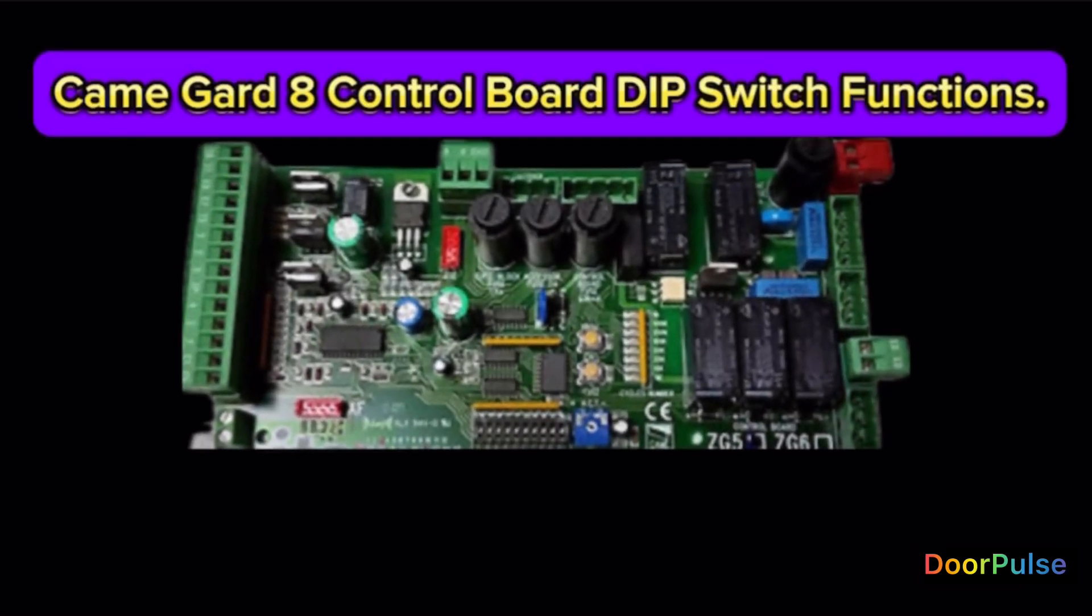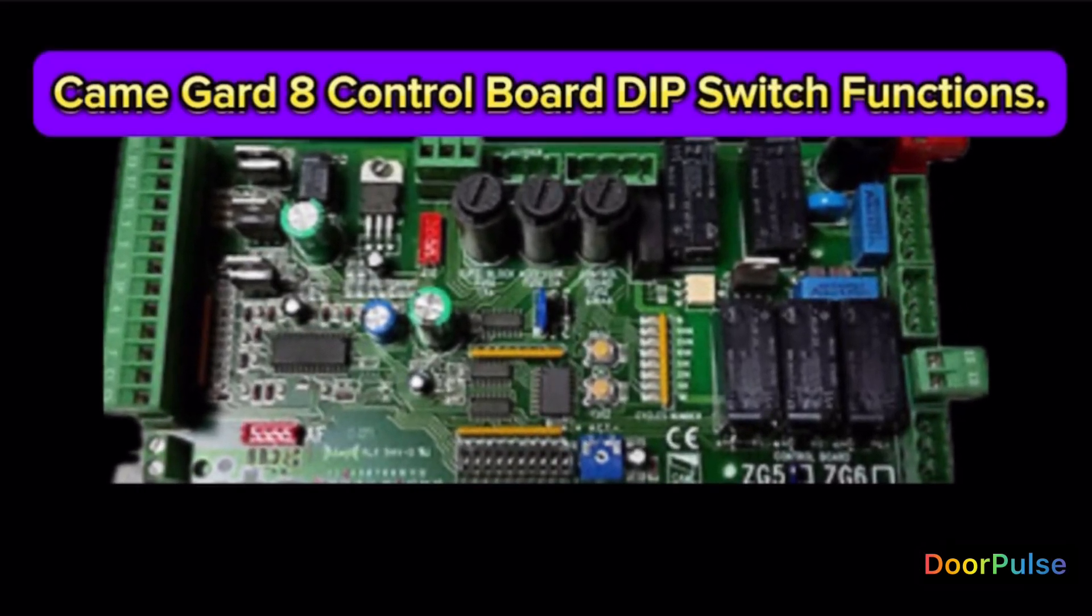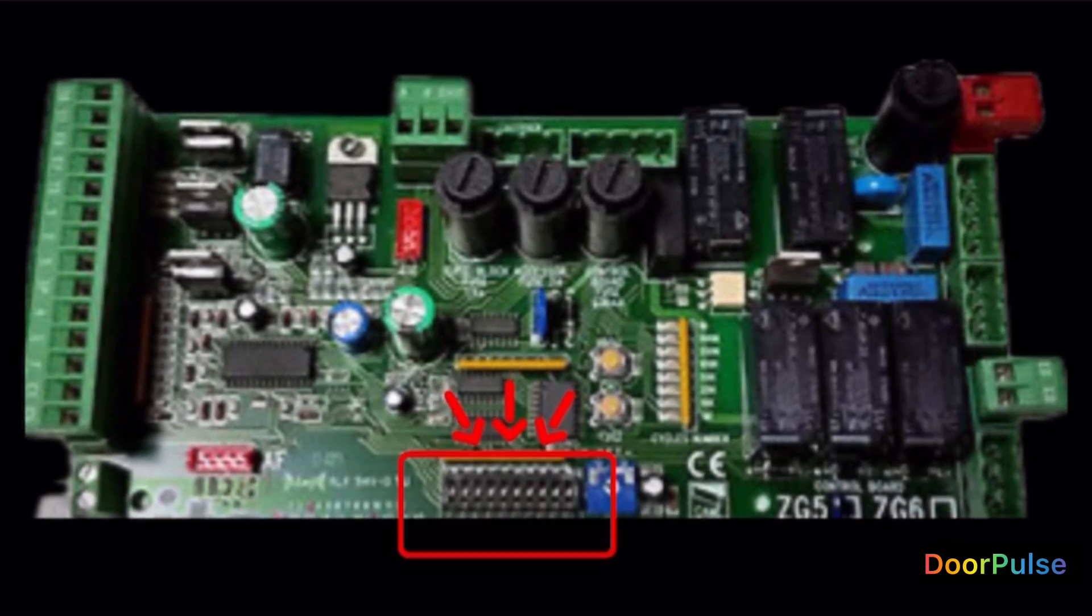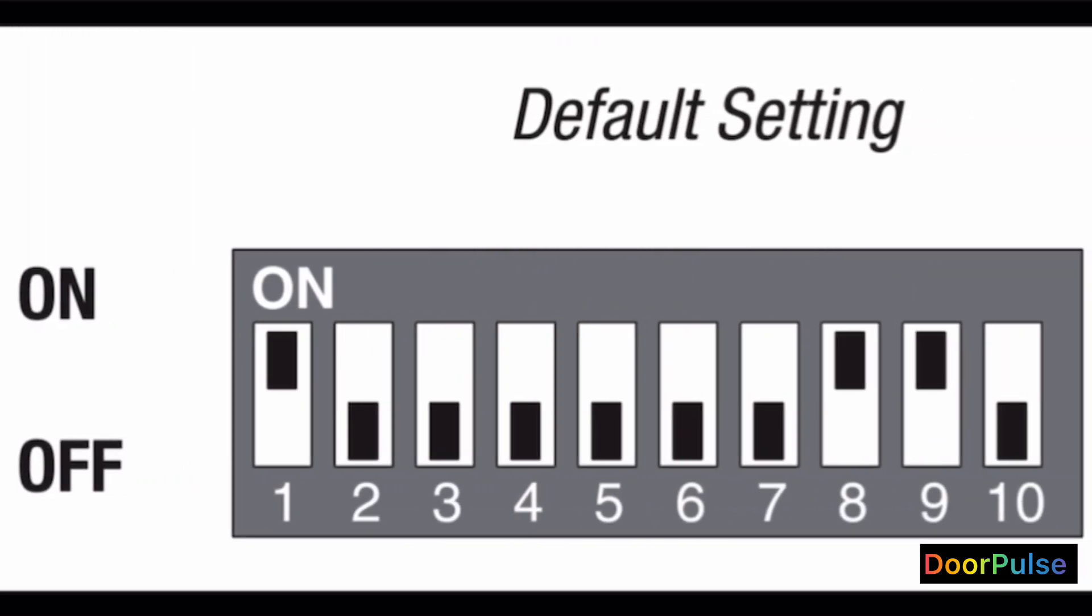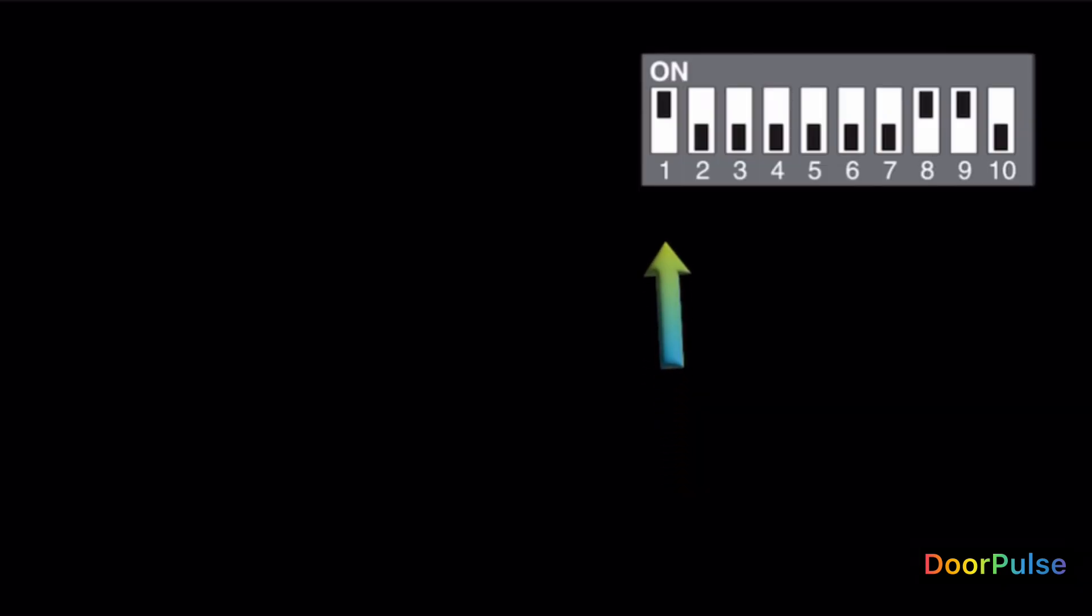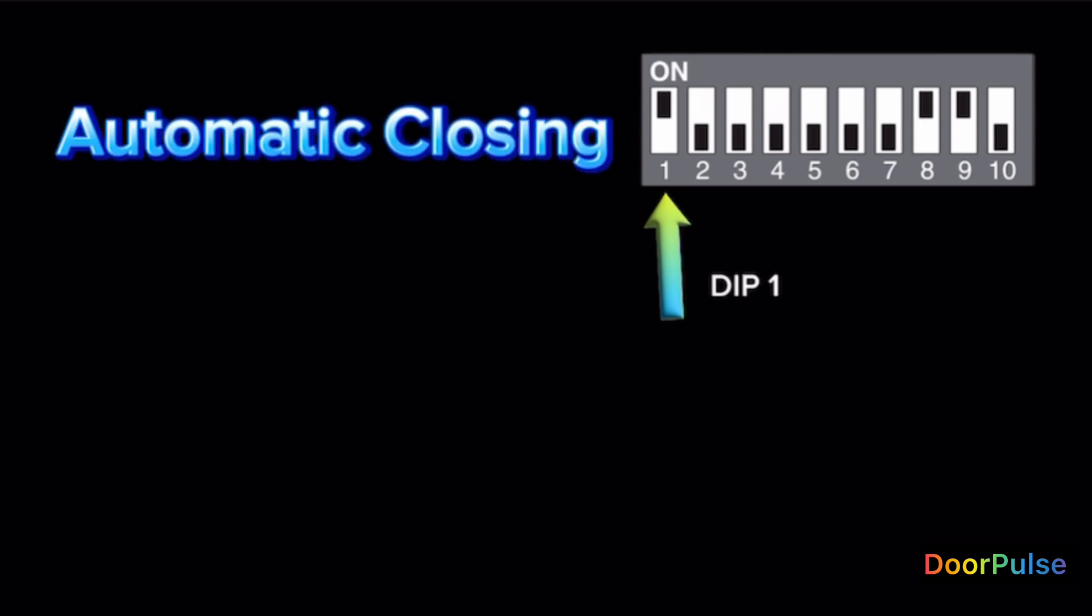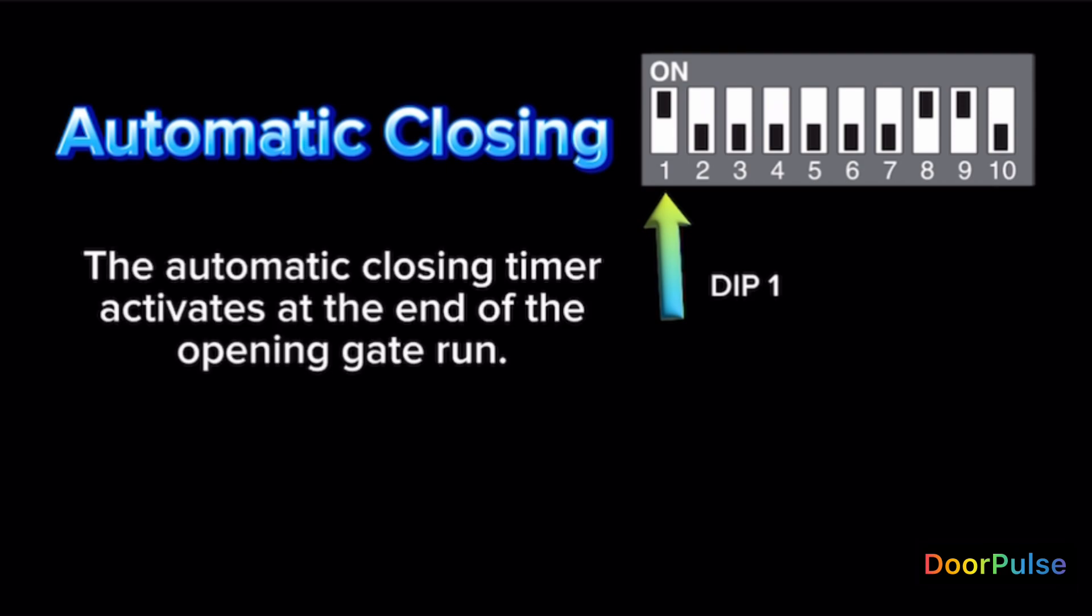CAME Guard 8 Control Board DIP Switch Functions. Switch 1. Automatic Closing. Switch 1 ON. The automatic closing timer activates at the end of the opening gate run.